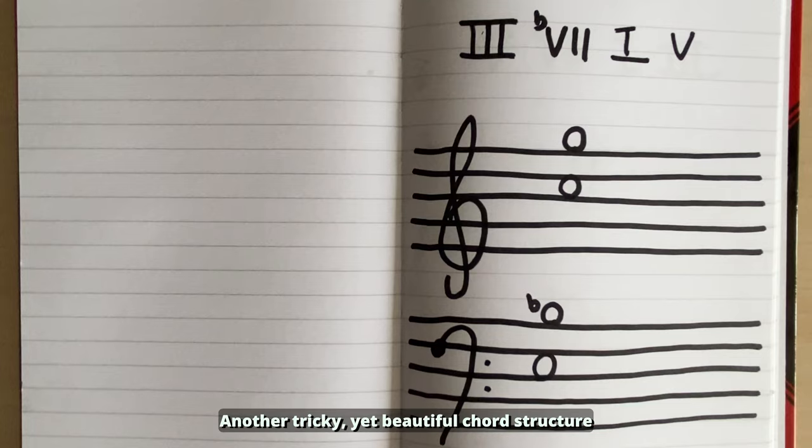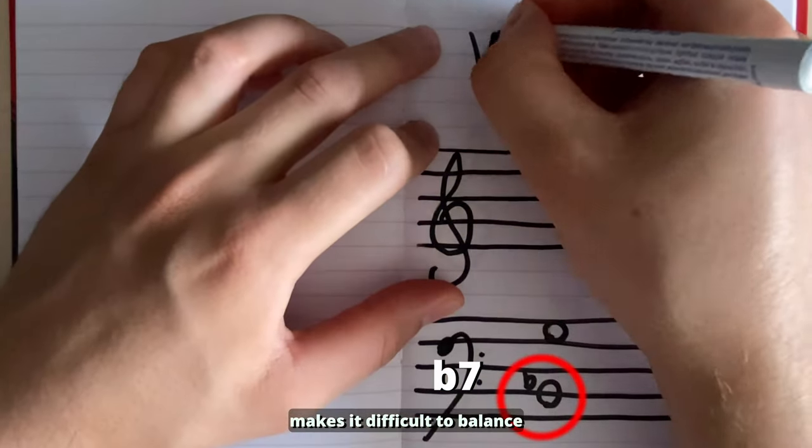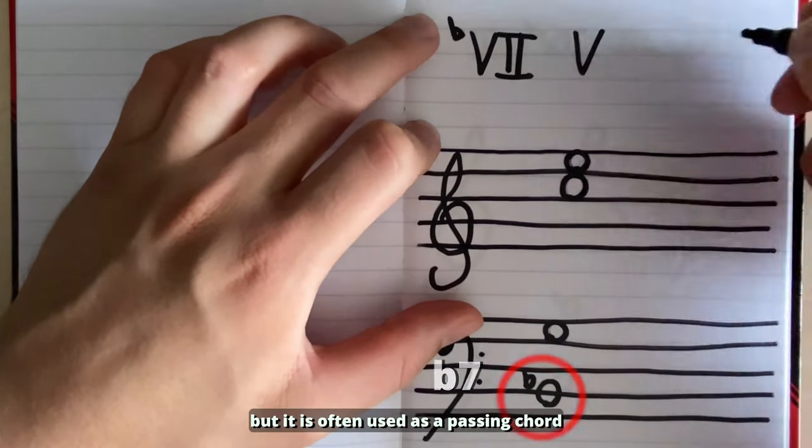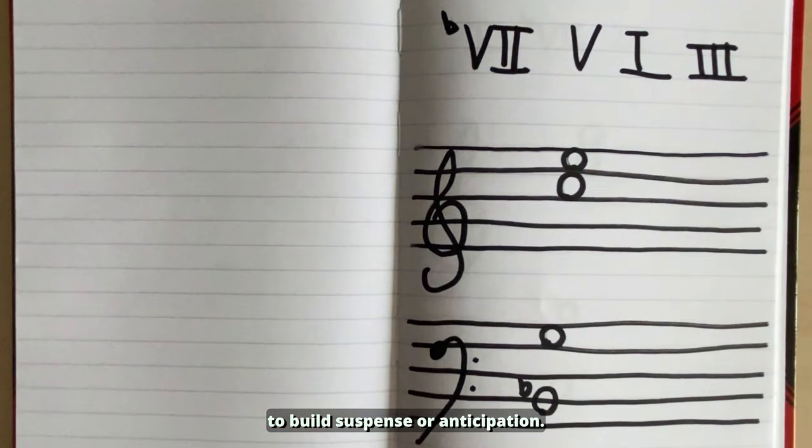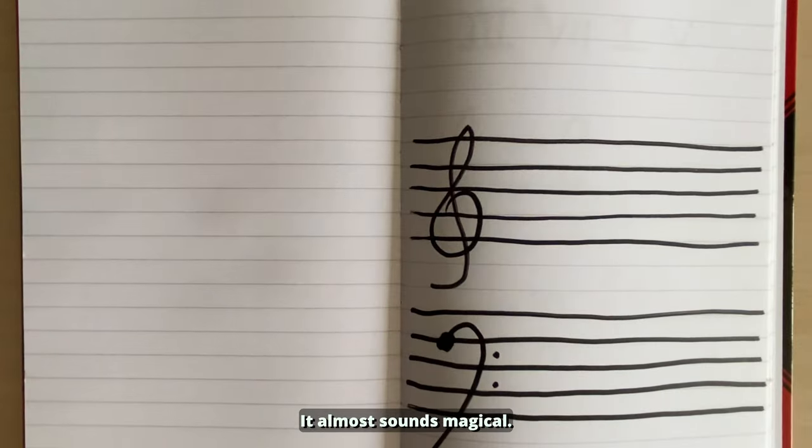Another tricky yet beautiful chord structure to master. Placing the flat seventh in the bass makes it difficult to balance, but it's often used as a passing chord to build suspense or anticipation. It almost sounds magical.